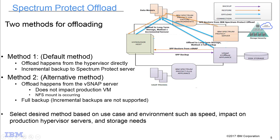When choosing which methodology to use, consider that if you don't want to impact your production virtual machines, method two is the better choice since it uses already-backed-up images. You'll also want to consider speed — depending on the storage type underneath your VSNAP appliance, method two might be faster, or if you have better disk, method one might be preferable.